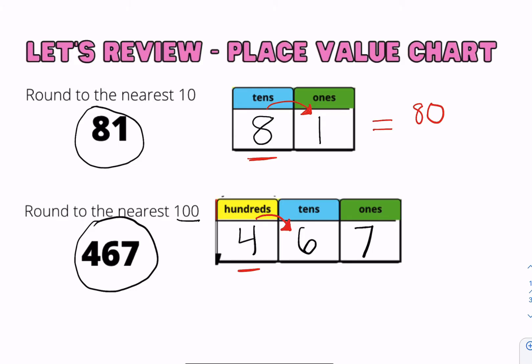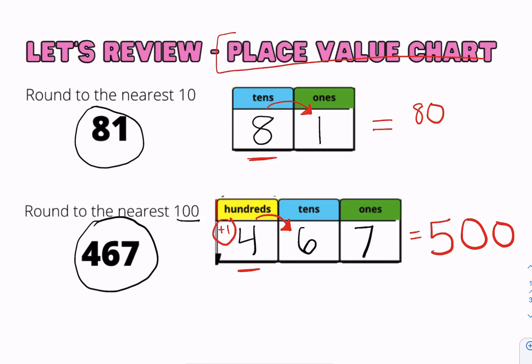If the neighbor digit is 5 or more, we're going to add one more to the 4. If it's 4 or less, we're going to let it rest. Since the number is 6, we add one more to the 4, so it becomes 5. Everything else becomes zeros. So 467 rounds to 500.